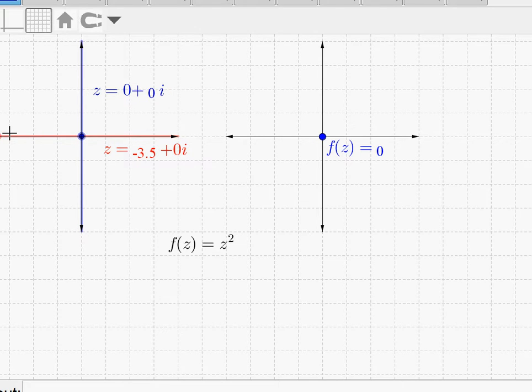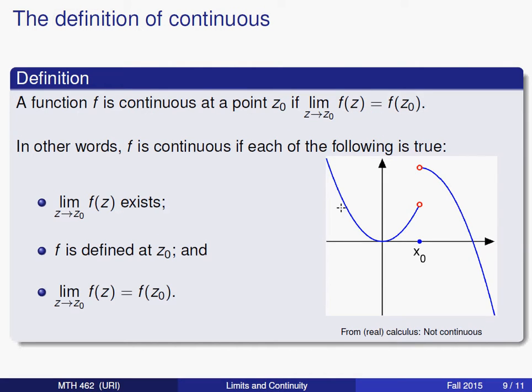When you're dealing with a real function, the idea is that as x moves along the x-axis smoothly, your y-coordinates should also change smoothly, connectedly. You shouldn't have any jumps like we have here.